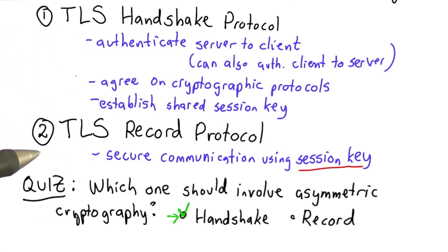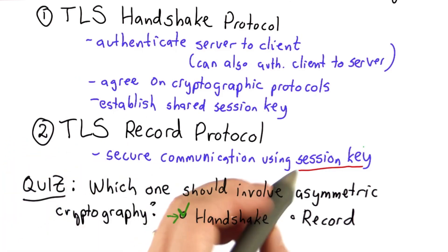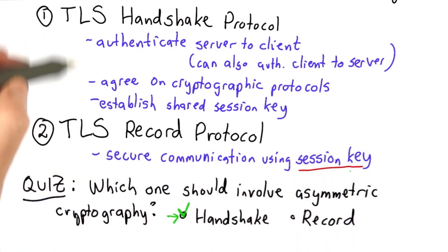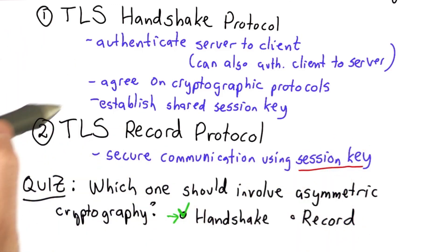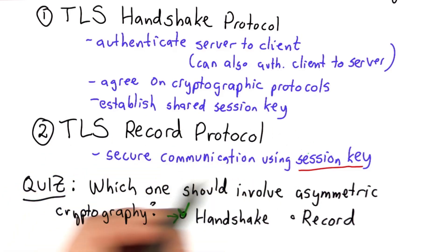It uses a combination of asymmetric and symmetric crypto. The record protocol only uses symmetric encryption. The reason for that is that we've established a session key by the end of the Handshake. Now we can use symmetric encryption, which is much faster, for encrypting all the content of pages.